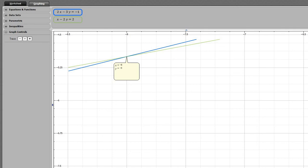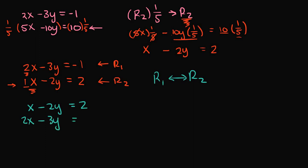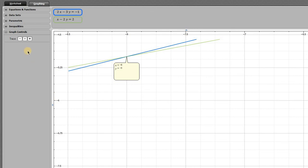We're trying to get this into row echelon form, so we want a leading one term in the first equation and a zero x term in the second. Equation 2 already has a leading one term, so we can use the elementary row operation of switching row 1 and row 2. That gives us x minus 2y equals 2 and 2x minus 3y equals negative 1.